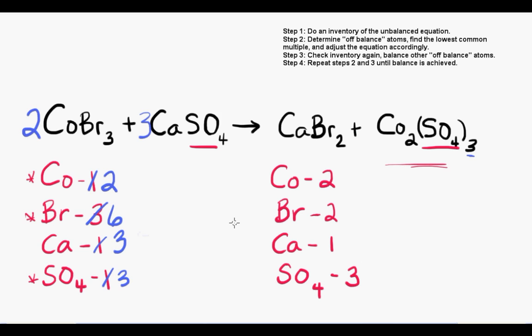Just to recap, cobalt and sulfate are both balanced, but calcium and bromide still need to be fixed. The good news is calcium and bromide exist together in a compound on the right, so we can kill two birds with one stone here.